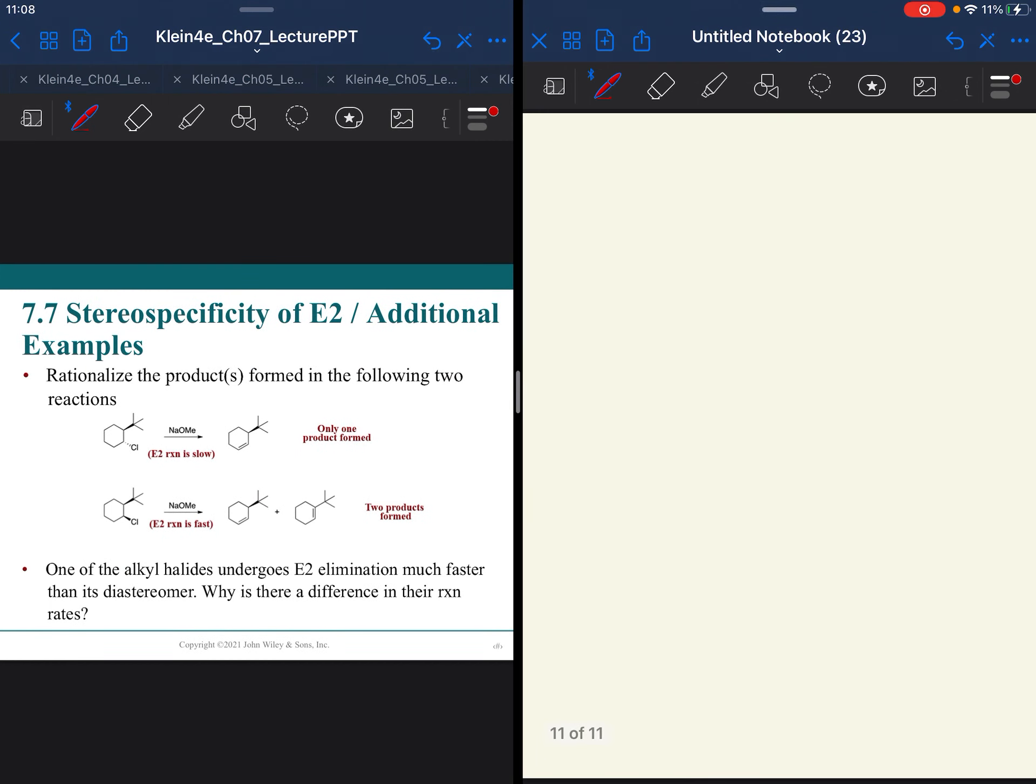All right, so there's some reasons here now that one product or more than one product might be formed. So when we think about the reaction here, we have a big bulky T-butyl group. That hydrogen is on the same side as that chlorine, so they can't be anti to each other anyway. But this hydrogen is coming towards us. And so even though we have a small base, Na-O-Me,